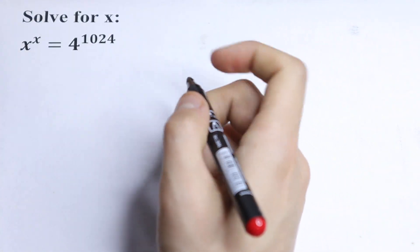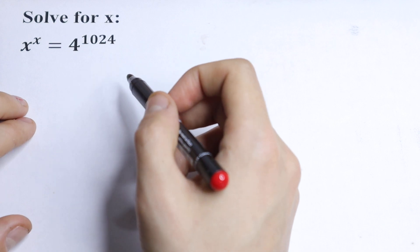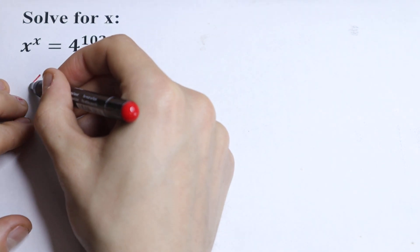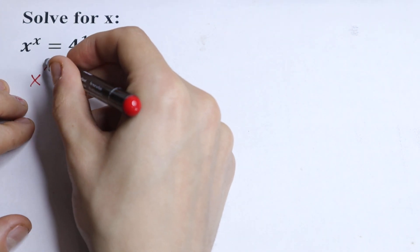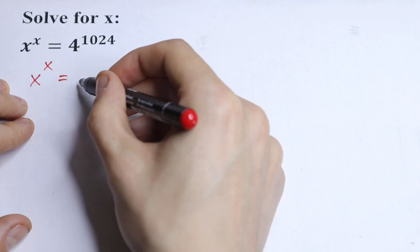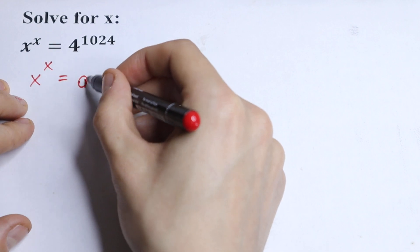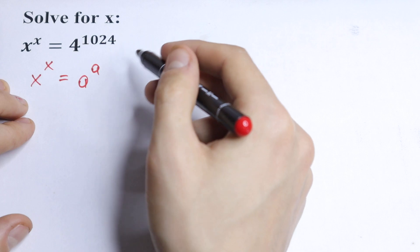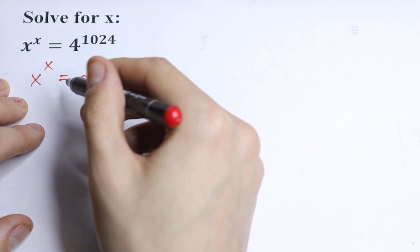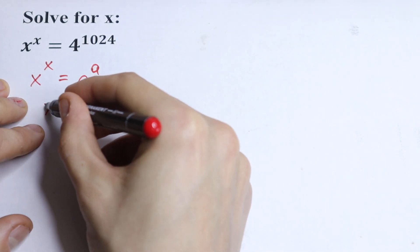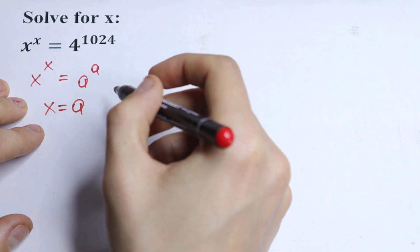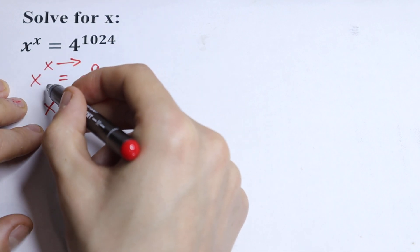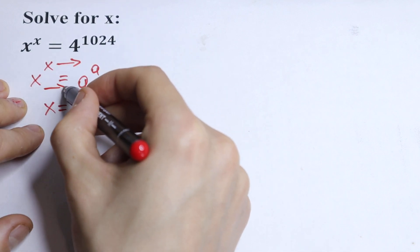First of all, we can simplify this a little bit. If we have x to the power x equal to a to the power a — same base and same exponent — we can write that the solution will be x equal to a, because that is the one and only way that this works.